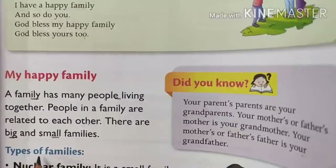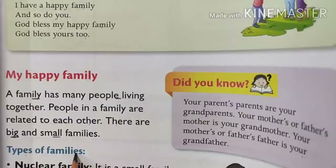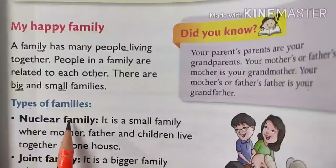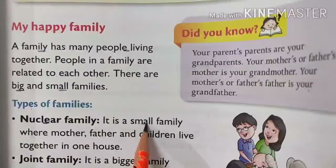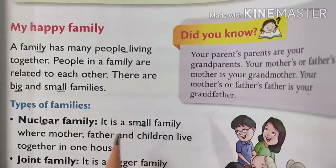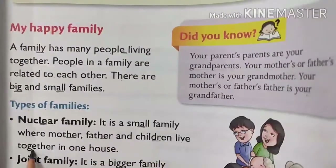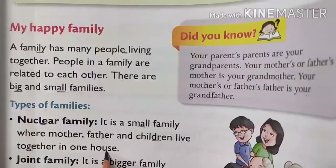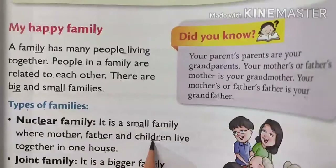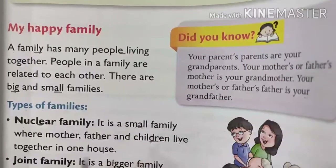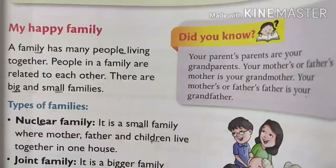Now students, types of family — hum kya study karenge? Kitne type hain family ke? First of all, nuclear family. Nuclear ka meaning kya hai? Small family — jismein kaun-kaun rehta hai? Your mother, father, and children live together in one house. So this is called nuclear family.